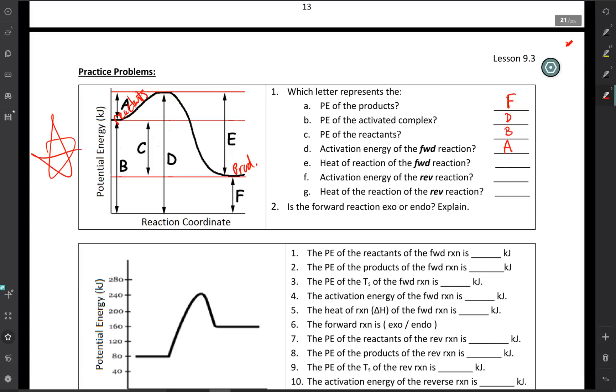The heat of the reaction for the forward reaction. Now the heat of the reaction is delta H. And that's always equal to products minus reactants. So I've got F is my products. B is my reactants. So the difference between F and B looks like it's going to be C.